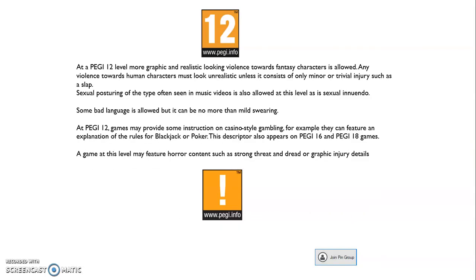PEGI 12: more graphic and realistic-looking violence towards fantasy characters is allowed. Any violence towards human characters must look unrealistic, unless it consists of only minor or trivial injuries such as a slap. Sexual posturing of the types often seen in music videos is allowed, as is sexual innuendo. Some bad language is allowed, but it can be no more than mild swearing. At PEGI 12, games may provide some instruction on casino-style gambling like blackjack or poker — this also appears in the PEGI 16 and 18 ratings. A game at this level may also feature horror content such as strong threat and dread or graphic injury details.